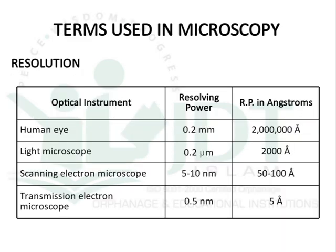Comparing resolution powers: the human eye has a resolution of 0.2 millimeters. A light microscope has a resolving power of 0.02 micrometers (10⁻³), a scanning electron microscope up to 5 to 10 nanometers, and a transmission electron microscope 0.5 nanometers. The transmission electron microscope has the greatest resolution power, as it can distinguish two points separated by just 0.5 nanometers (0.5 × 10⁻⁹ meters) as two separate points.